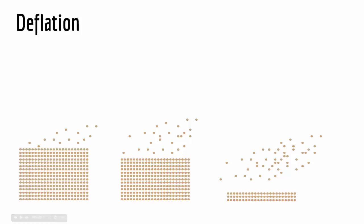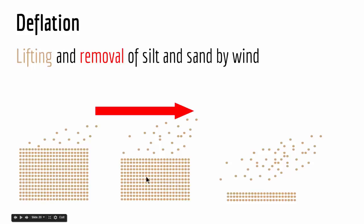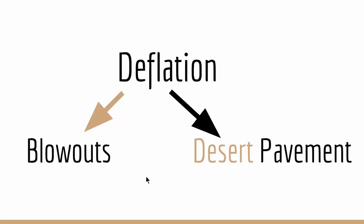Let's look at each of these in more detail. The first type of erosion due to wind is called deflation. Deflation is the lifting and removal of silt and sand by wind. When you have silt and sand on the floor of arid areas, the removal and lifting of these sand and silt by wind is called deflation, as you can see in this illustration.